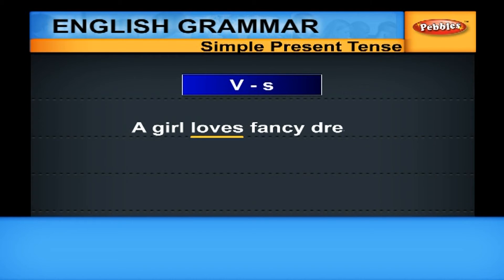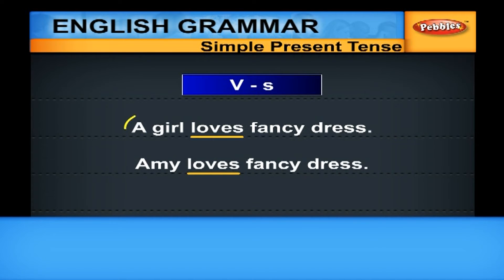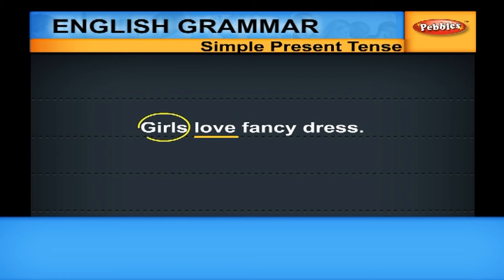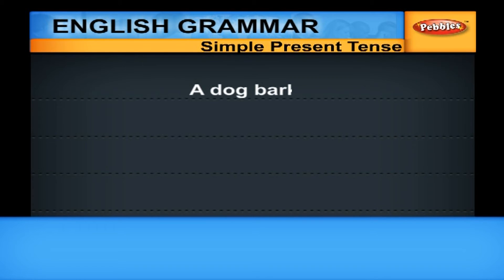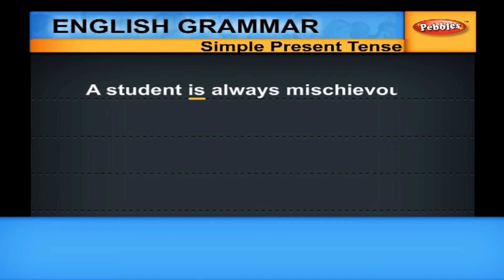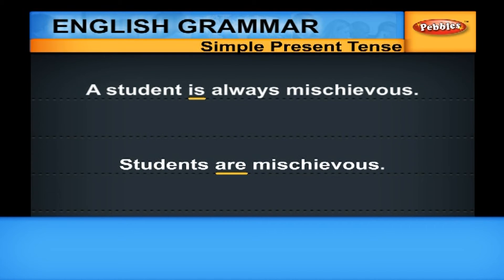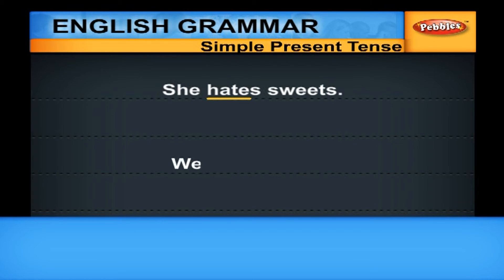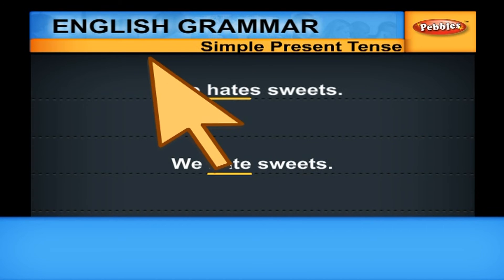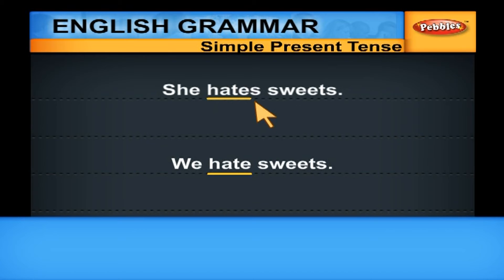For example: A GIRL LOVES FANCY DRESS, or AMY LOVES FANCY DRESS — it is a singular subject, so we use VS form. GIRLS LOVE FANCY DRESS — it is a plural subject, so we use V0 form. A DOG BARKS / DOGS BARK. A STUDENT IS ALWAYS MISCHIEVOUS / STUDENTS ARE MISCHIEVOUS. SHE HATES SWEETS / WE HATE SWEETS. Remember: plural nouns take V0 form, singular nouns take VS form. This is a very vital area and you should not make a mistake here.